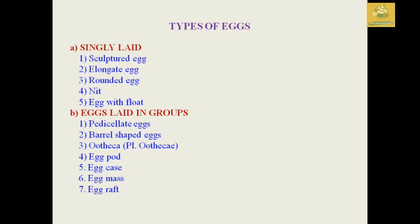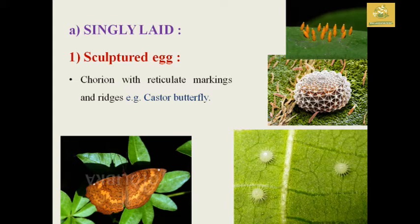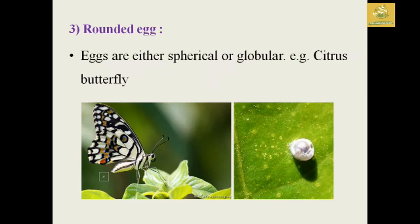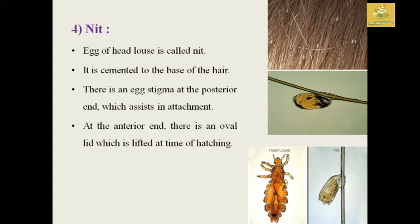There are types of eggs: the first is singly laid eggs and the second is eggs laid in groups. Among singly laid eggs, we have sculptured eggs where the chorion has reticulated markings with ridges — for example, the castor butterfly. There are also elongated eggs with a cigarette shape — for example, the eggs of the sugarcane fly — and round eggs which are spherical or globe-shaped, for example the citrus butterfly.